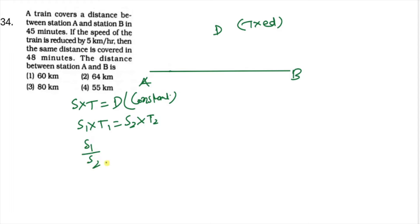So you can write S1 × T1 equals S2 × T2. From here, S1/S2 equals T2/T1. T2 final time is 48 minutes and initial time is 45 minutes. So 48/45, which simplifies to 16/15.